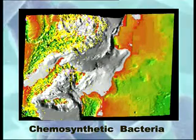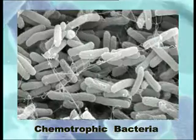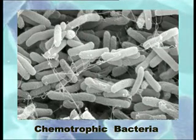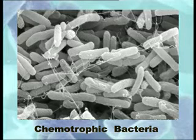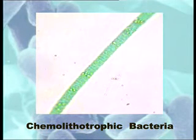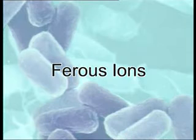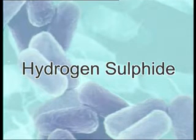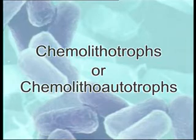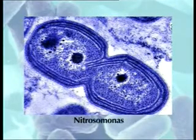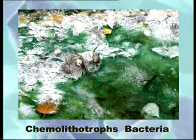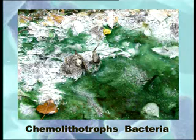Chemosynthetic or chemotrophic bacteria are most abundant and are important geochemical agents. These are non-photosynthetic but autotrophic bacteria. They derive energy and electrons from ammonia, nitrate, nitrite, ferrous ions, hydrogen sulfide, and other inorganic compounds for the synthesis of their food, and hence are called chemolithotrophs. For example, bacteria of the genus Nitrosomonas use ammonia as their electron source, obtaining energy by oxidizing ammonia to nitrite. Chemolithotrophs contribute greatly to the chemical transformation of elements.